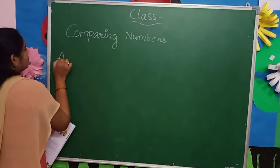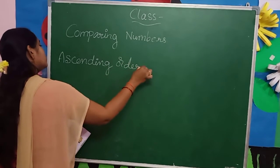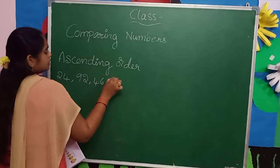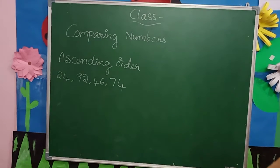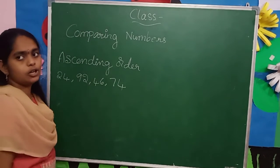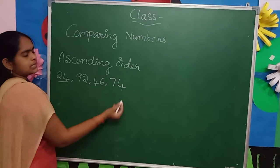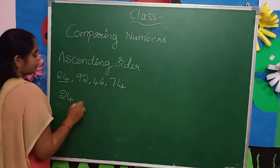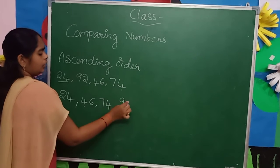Ascending order example. Children: twenty-four, ninety-two, forty-six, seventy-four. We have to keep these numbers in ascending order — small number to big number. The smallest number is twenty-four. After that, forty-six. After that, seventy-four. After that, ninety-two.